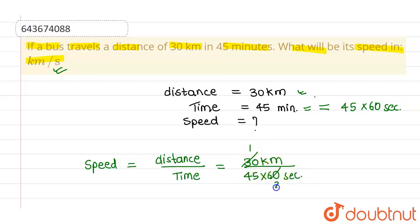So this will be 1 by 90 kilometers per second. This will be the speed. So this is our